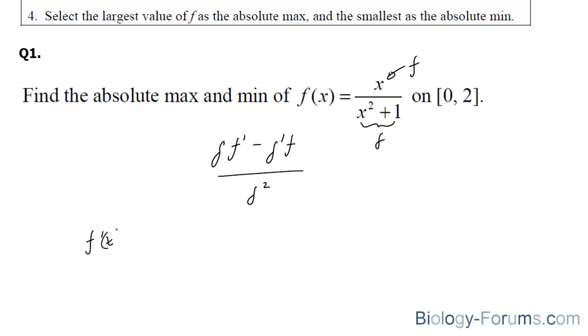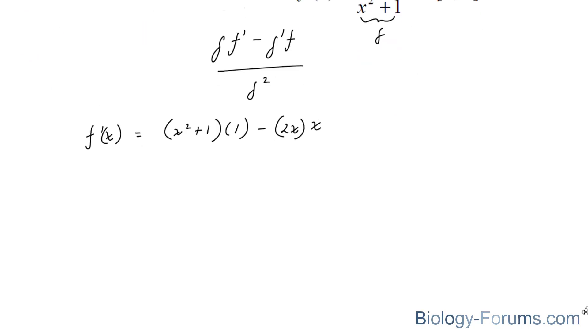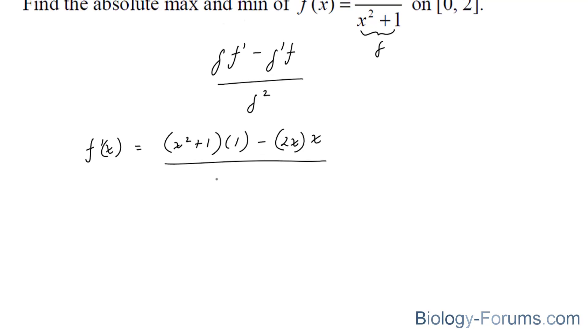f prime at x is equal to g the way it is times f prime, which is equal to 1, minus g, which is equal to 2x, times f, which is x. And in the denominator, you have x squared plus 1 to the power of 2.